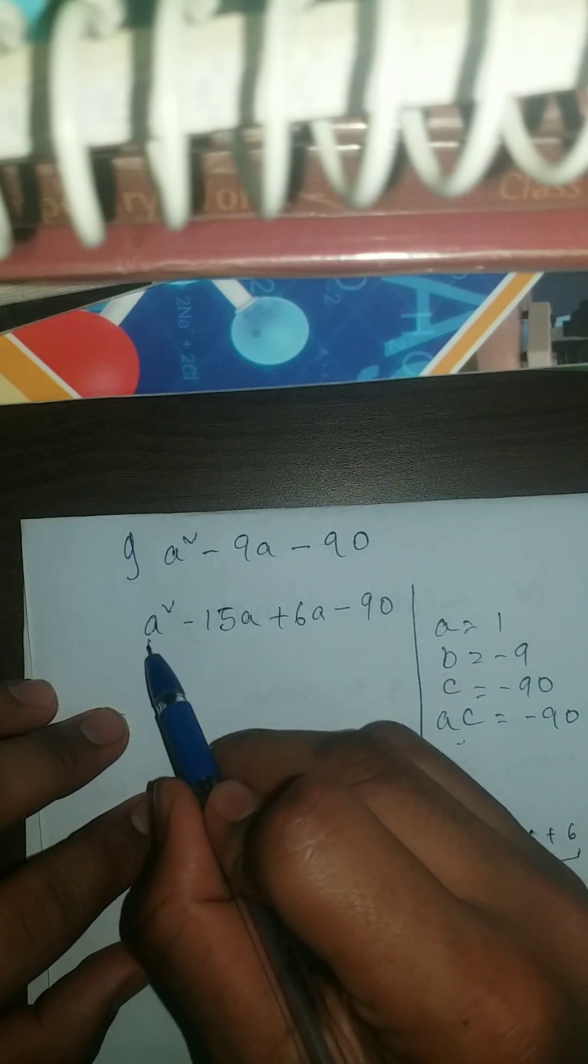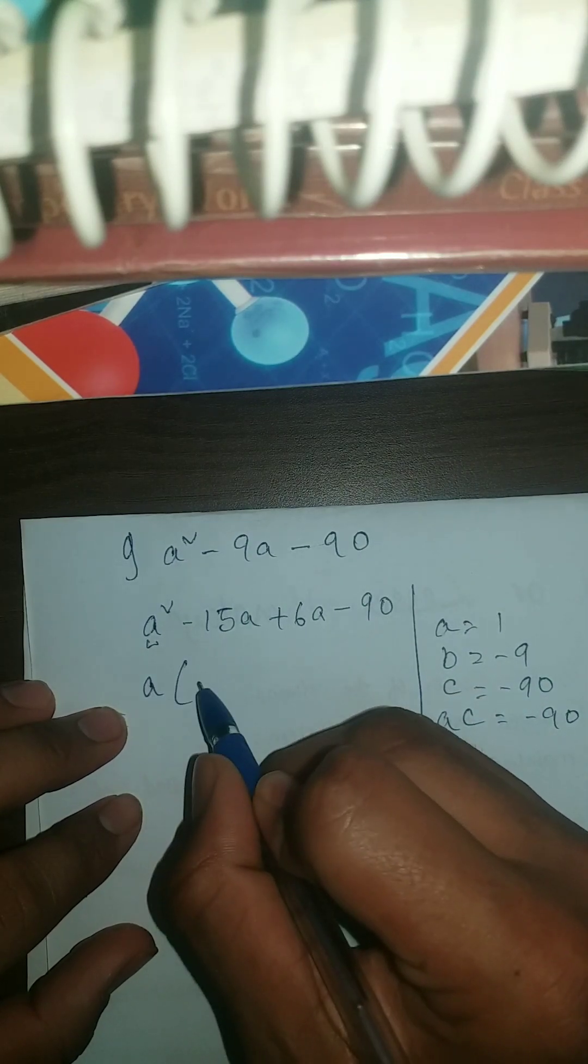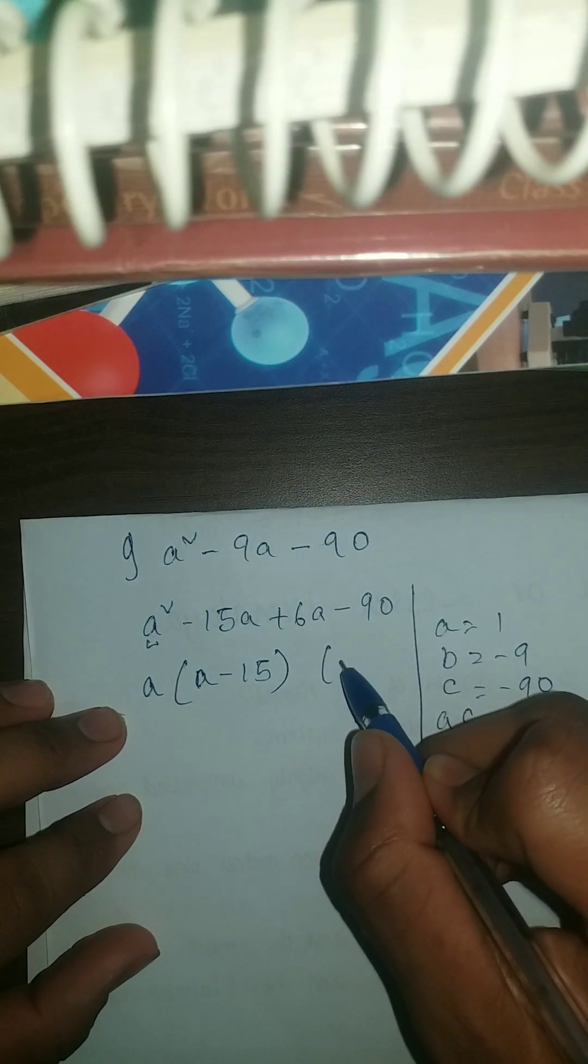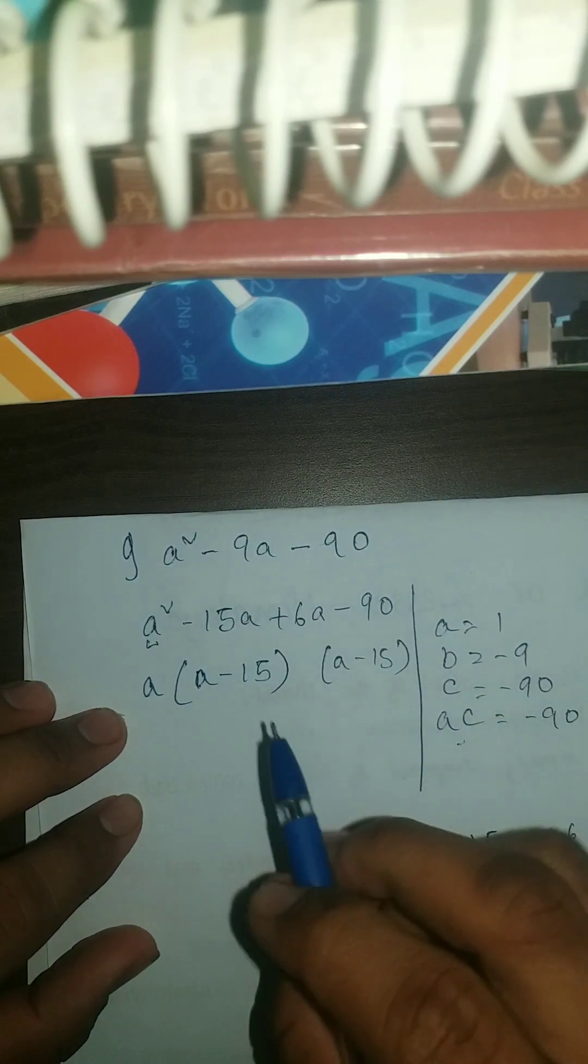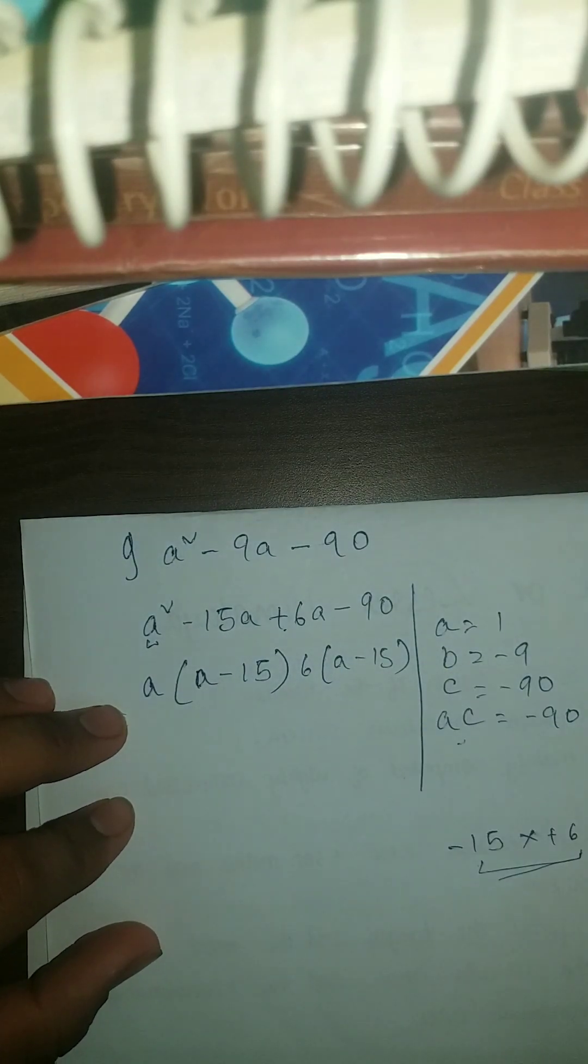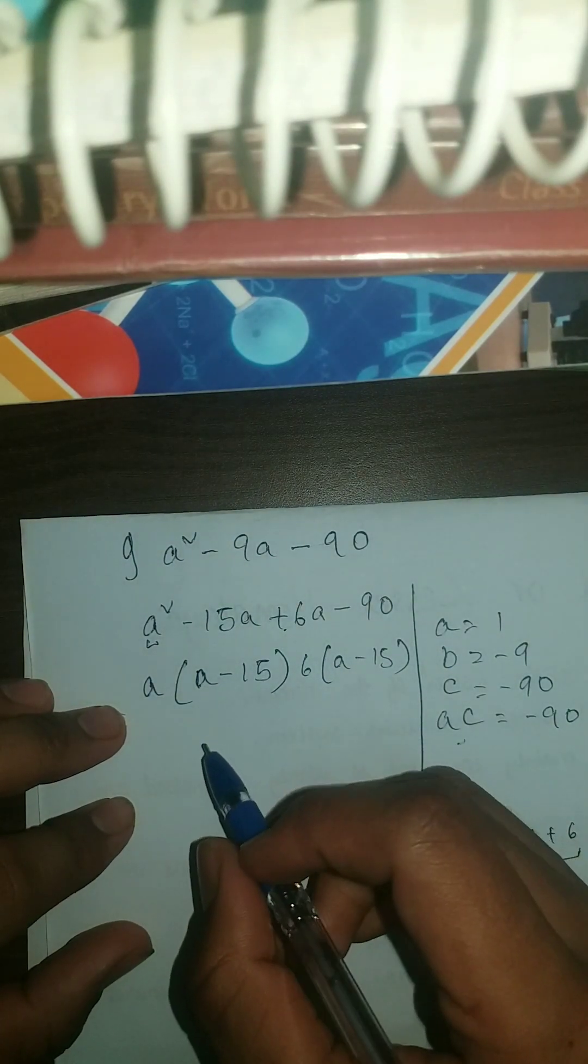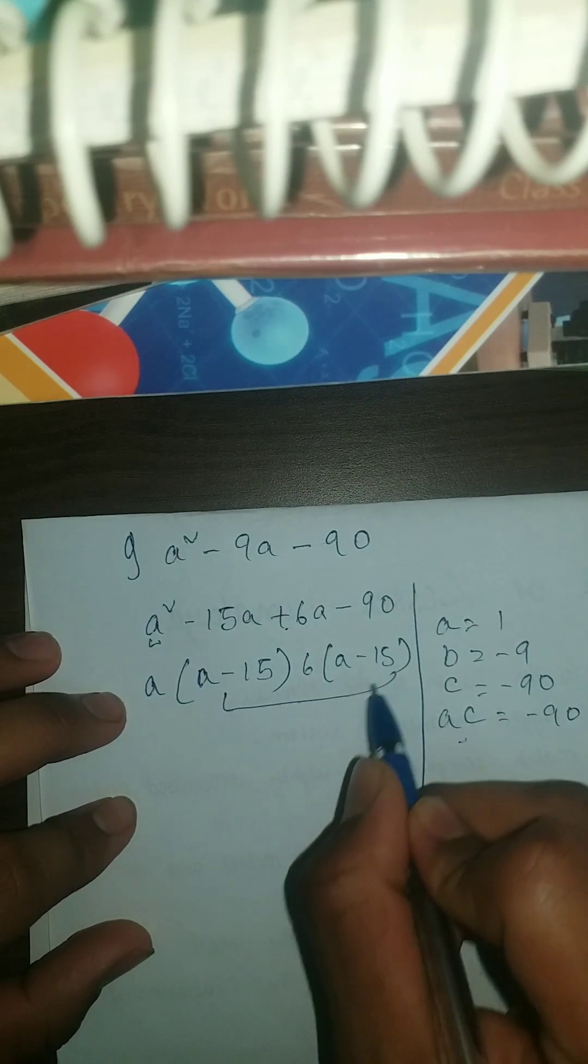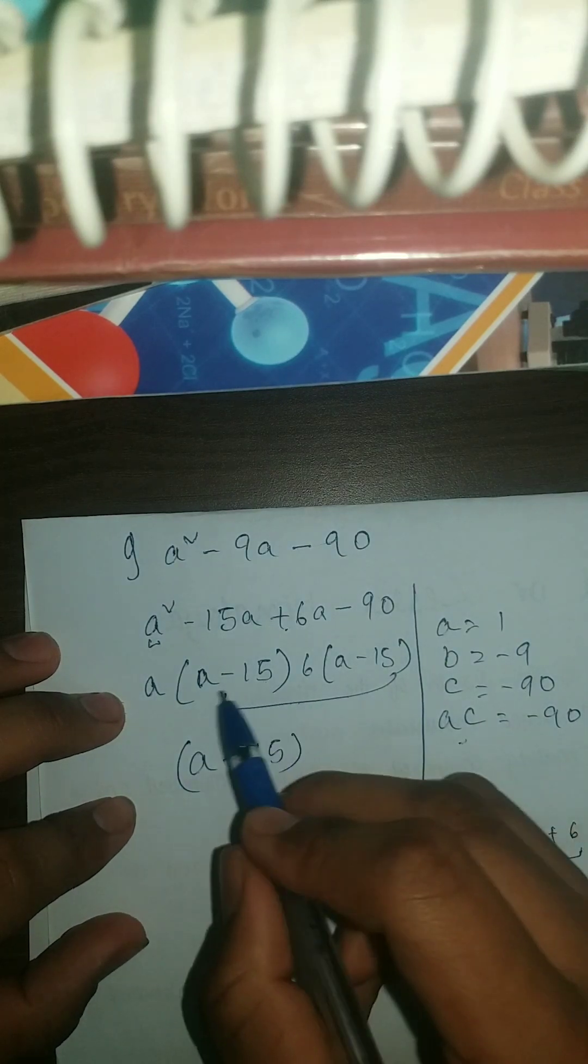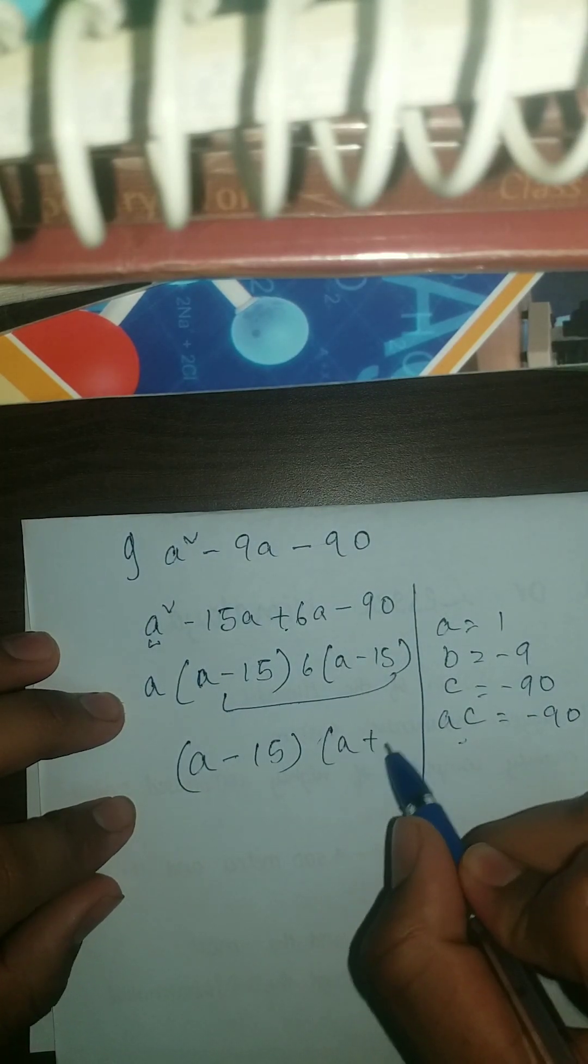Now here we're gonna take a common from here. So a, a minus 15. And again, you have to write a minus 15. After writing it we are left with 6. Here this is a common, so we're gonna take this a minus 15 and we'll left with a plus 6, so a plus 6.